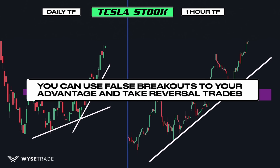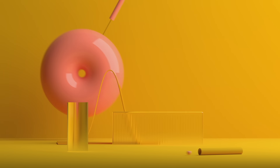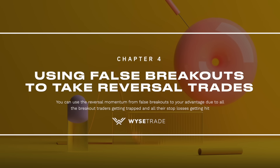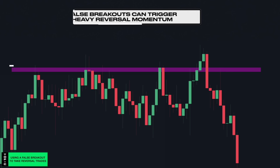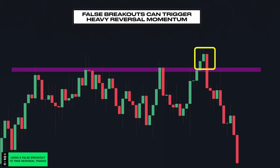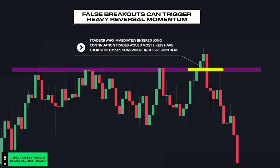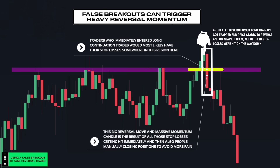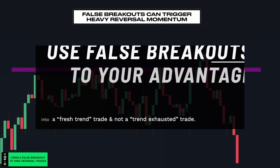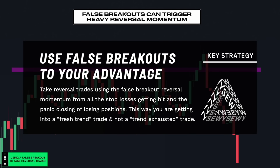Now you can actually use false breakouts to your advantage and take reversal trade entries. At a key level of resistance, when price breaks through, traders who immediately entered a long continuation trade would have placed their stop losses in the region just below. After they got trapped and price reversed, all those stop losses were hit, triggering a massive move in the opposite direction - hence the big bearish momentum candle that formed. Knowing this, you can use false breakouts to take reversal trades, getting into a fresh trend trade rather than a trend exhausted trade.